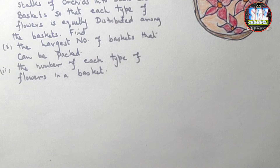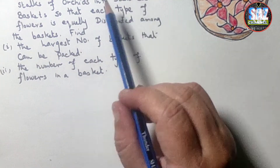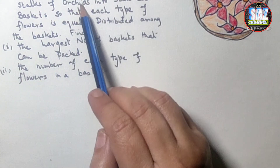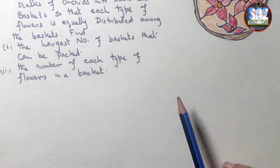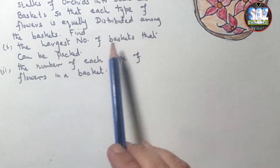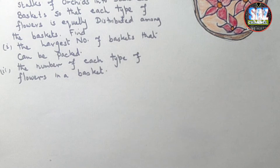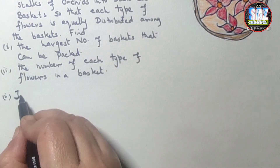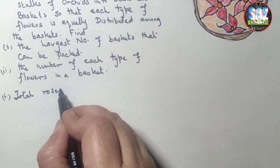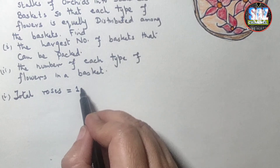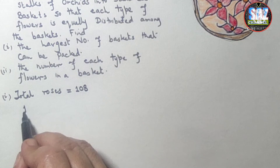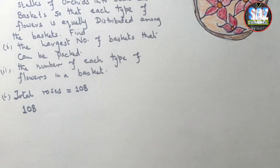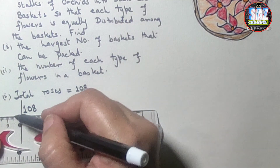Let me check the quantities once again: 108 stalks of roses, 81 lilies and 54 orchids, identically packed into baskets so that each flower is equally distributed. To find the largest number of baskets, we first need to find the HCF of the given quantities. For prime factorization, we need good command of tables, mental math skills, calculations and divisibility tests.